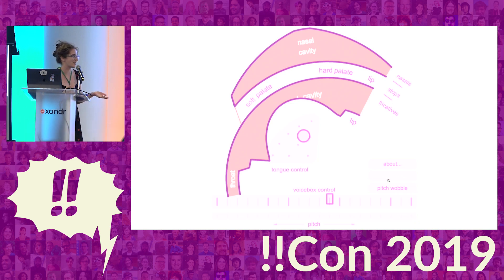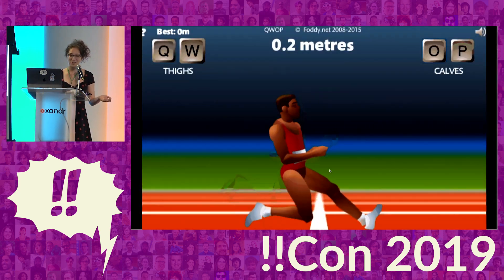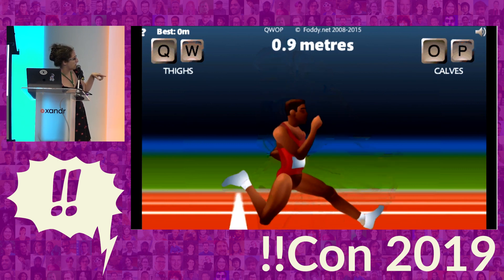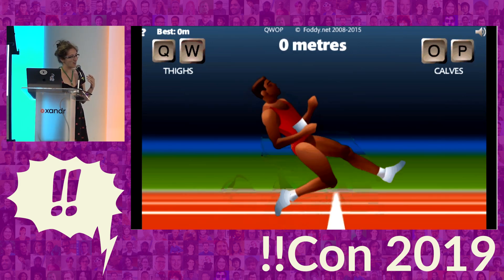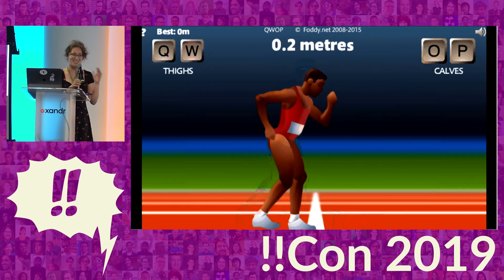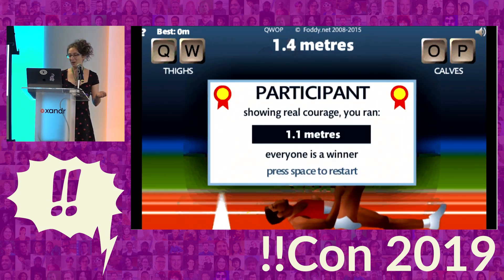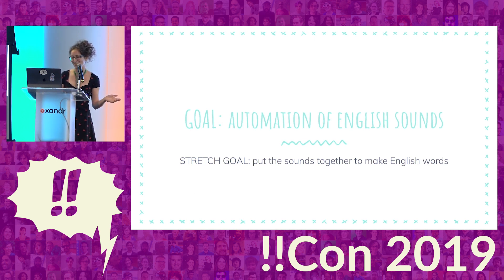It kind of reminded me of QWOP, this game I played in middle school — an activity I did every day — but when I tried to manually move the muscles using the app, it was really hard. In QWOP you're trying to get this guy to run using the Q, W, O, and P keys to move the muscles in your legs. I move my legs every day, but I don't know which muscles move at which time. It's the same thing with Pink Trombone. My goal was to figure out where to click to make English sounds, and then put those together to make English words. How hard could it be? Very hard.